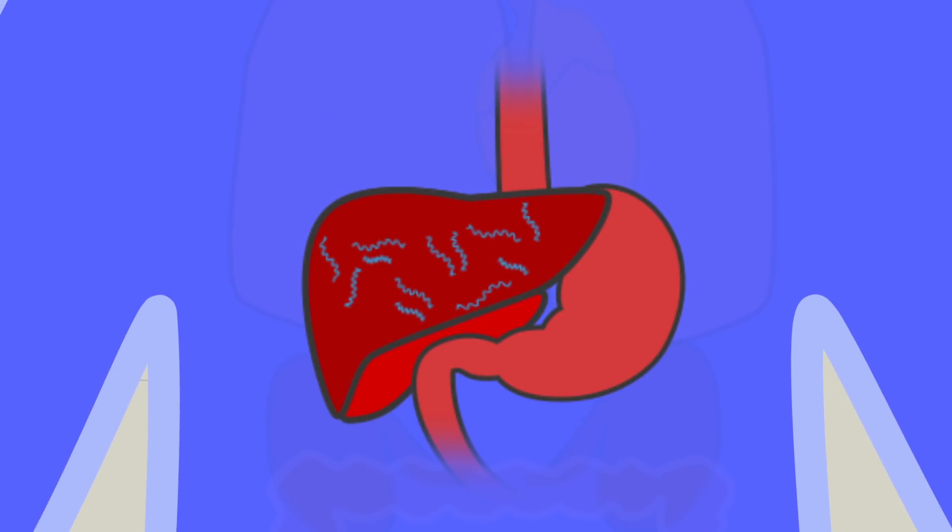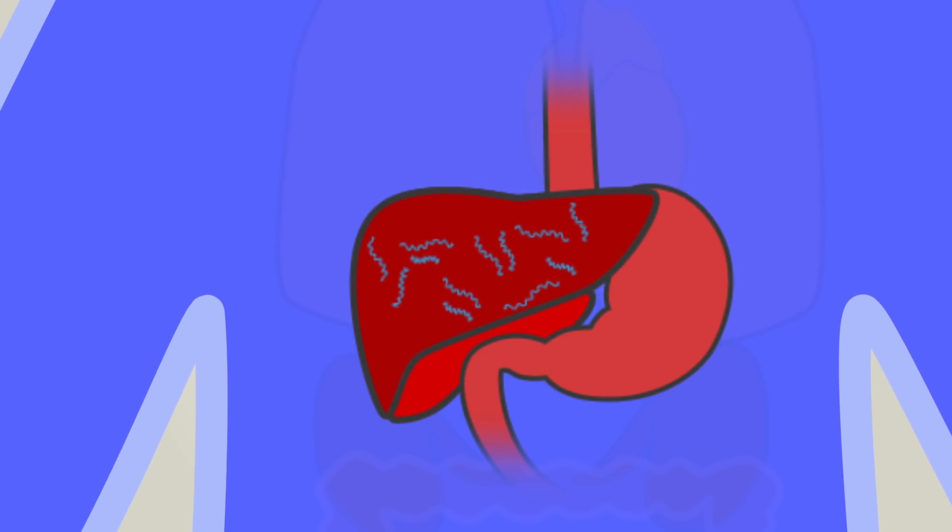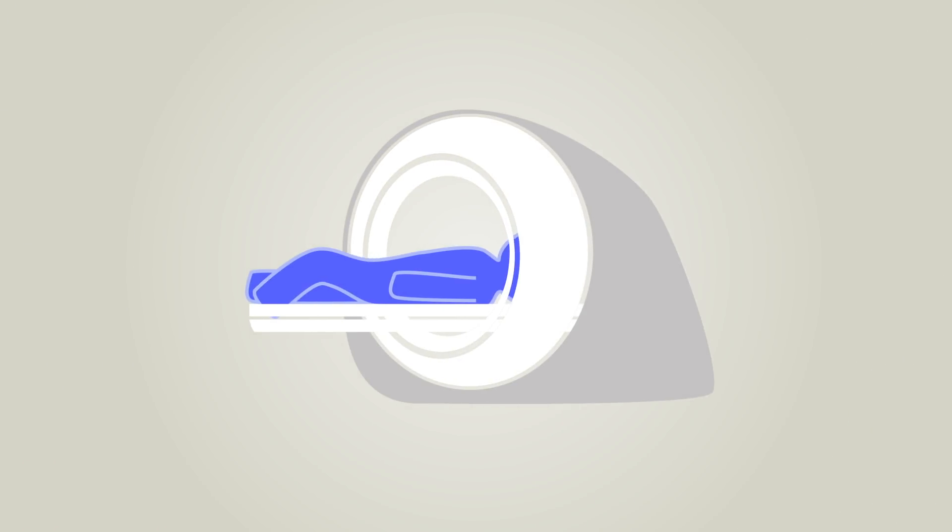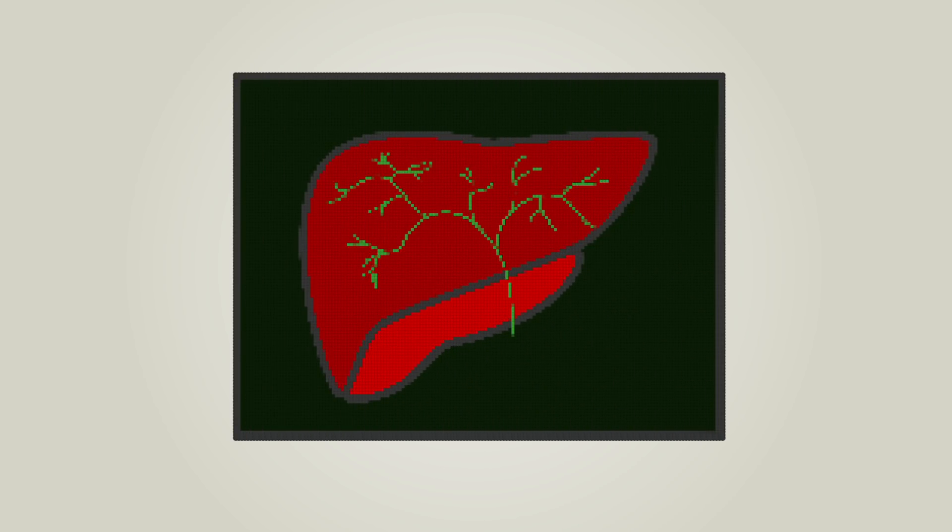PSC is often accidentally detected in blood tests through elevated liver enzymes. Usually doctors confirm diagnosis with a specialized MRI of the bile ducts, pancreas and liver.